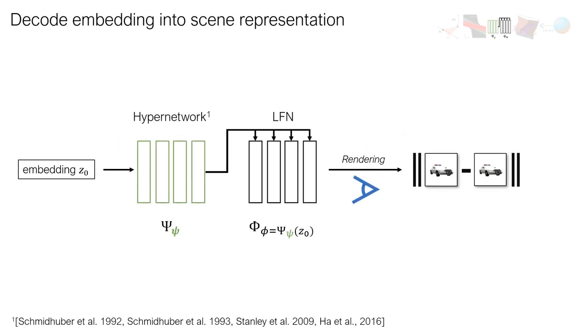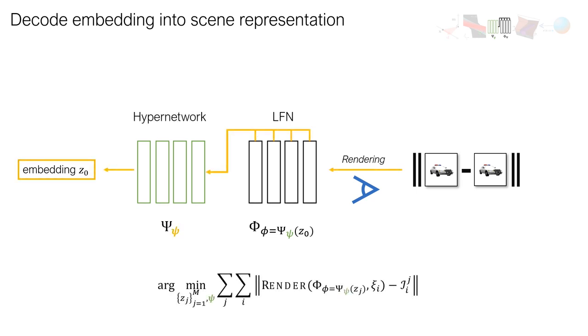In the forward pass, we use the LFN predicted by the hypernetwork from the latent code to render an estimate of the image of a scene. And in the backward pass, we back-propagate the loss into both the weights of the hypernetwork and into the latent code.